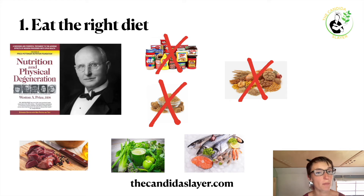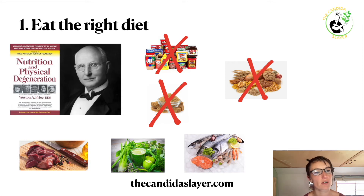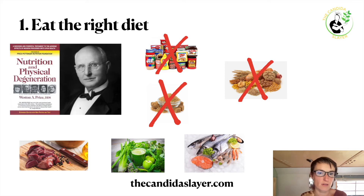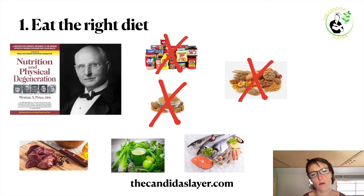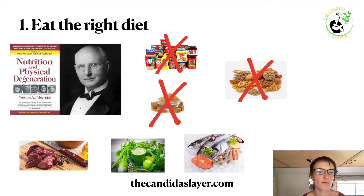Follow a Weston A. Price type of diet. If you don't know Weston Price, read his book 'Nutrition and Physical Degeneration' or watch my video about him — I'll put the link in the top right corner. A Weston A. Price diet means a natural diet: animal products, fish, meat, eggs if you tolerate them, dairy if you tolerate it — but usually people with gut issues cannot tolerate dairy. It's very important that you do a food intolerance test, which I talk about in several of my videos. It's easier to heal if you know your food intolerances.